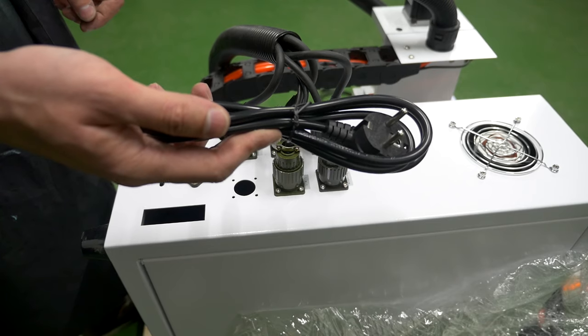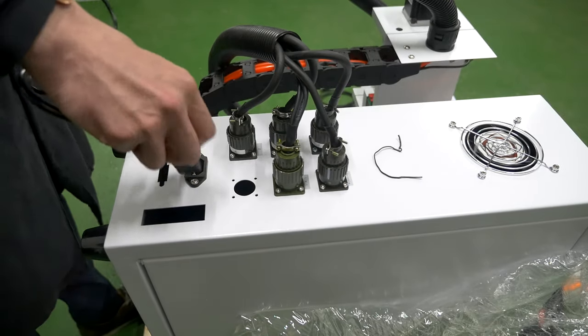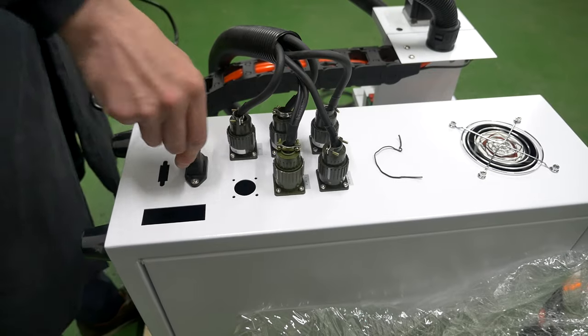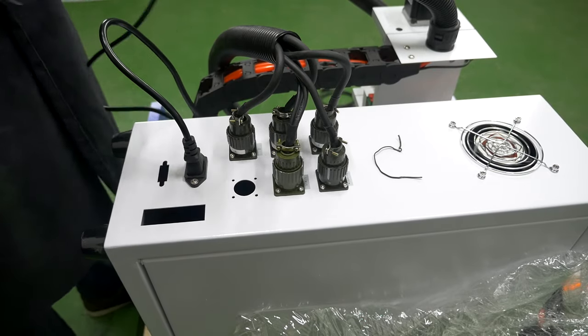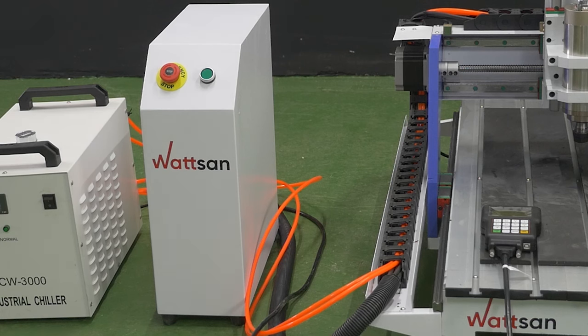Connect the power cable. Place the control unit next to the machine's bed.